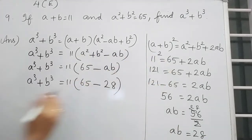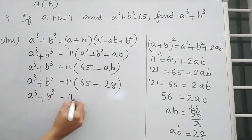So do like this way. Then only it will be easy for you to understand. Don't mix it. So A cube plus B cube is equal to 11 into 65 minus 28.